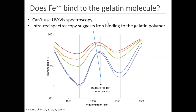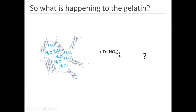Another thing we looked at was whether we could study how the metals are binding to this gelatin polymer. UV-vis was out of the picture because iron is a very strongly colored ion that changes color in different conditions. We did find some evidence from infrared spectroscopy to suggest the metal is binding to that gelatin polymer backbone. So at this point we had a lot of evidence to show that the iron was interacting with the gelatin, that different factors were causing the foaming, but really we wanted to know: what is actually happening to the polymer when we add the iron nitrate?